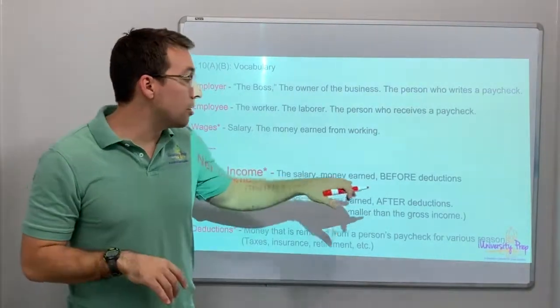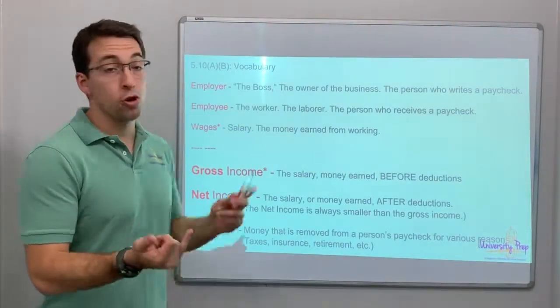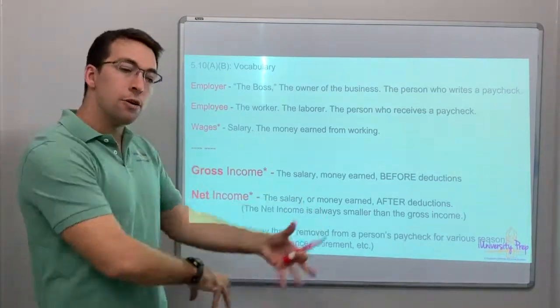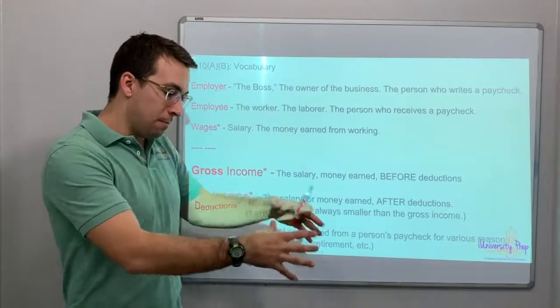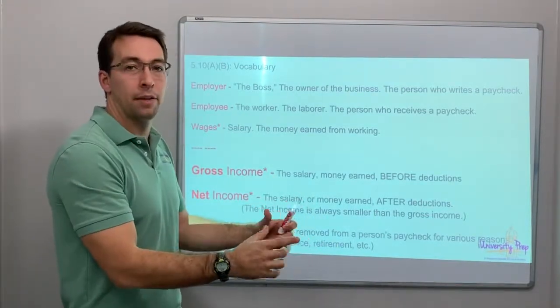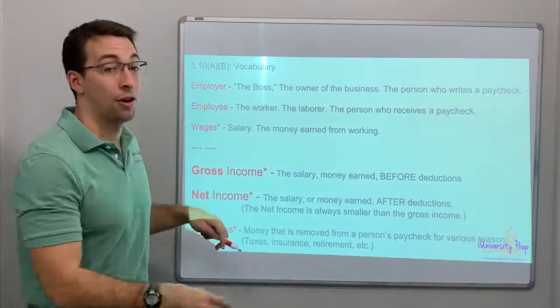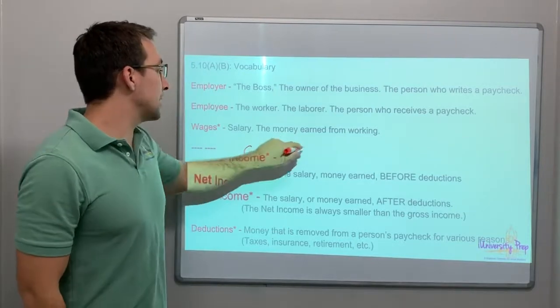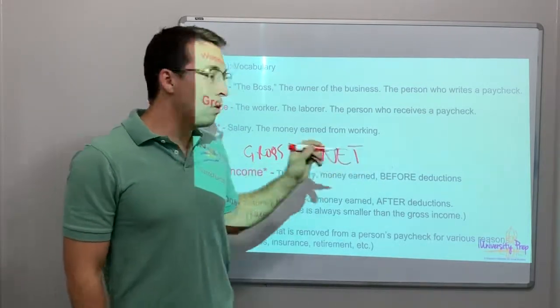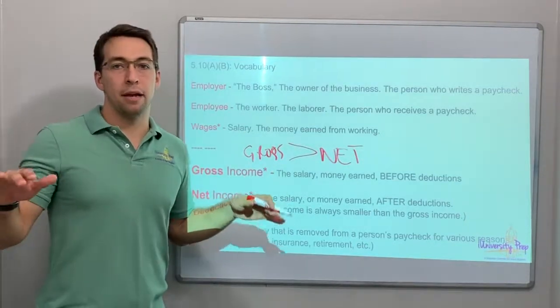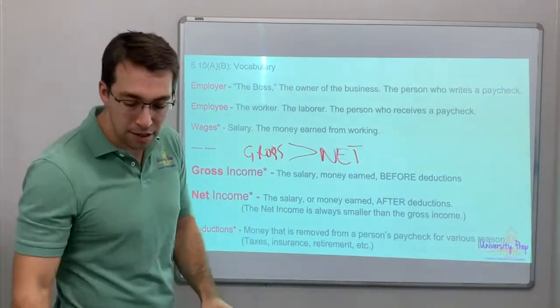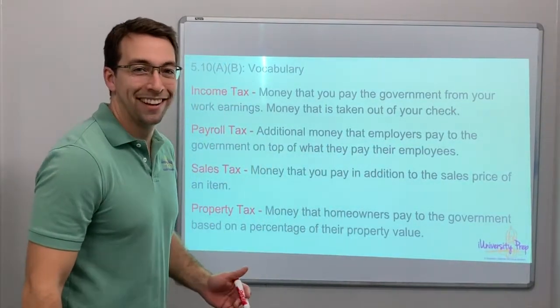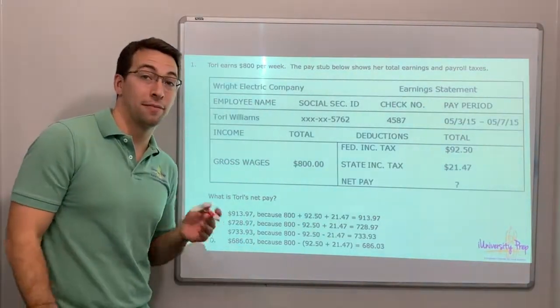Gross income is the salary or money earned before deductions. So before you pay insurance, before you pay taxes, before you save money for retirement, it comes out of your check. So you get paid, and before all of that stuff comes out, that's the money you make. The net income is after all that stuff comes out. The gross is greater than the net. If you remember that, you got it made. Gross is bigger than the net. Every time. It is gross how much money comes out of your check. It's gross how many deductions there are.